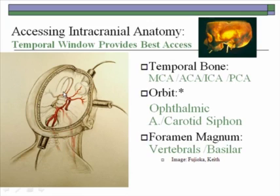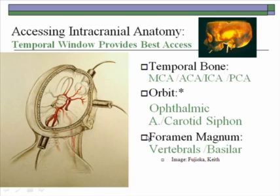It is important when doing the orbital view to lower the power settings because you no longer have to go through the bone. The foramen magnum is another opening at the base of the skull. Because you require significant depth penetration to assess the basilar artery, power levels are usually kept at about 50%.